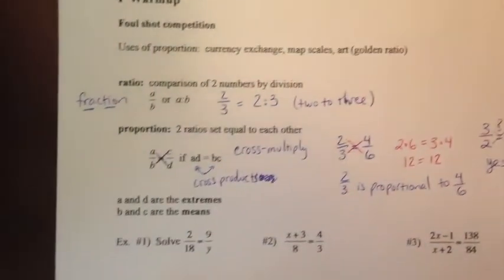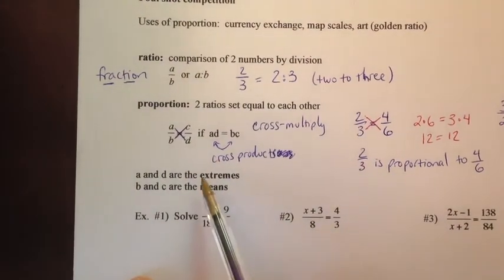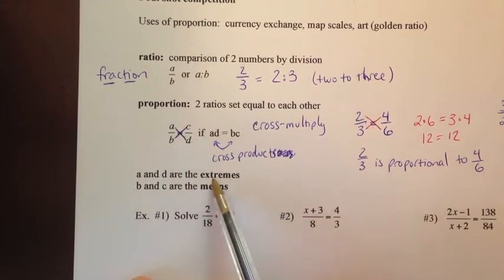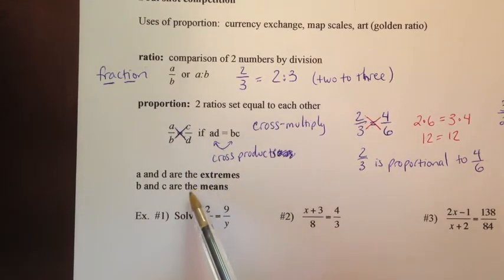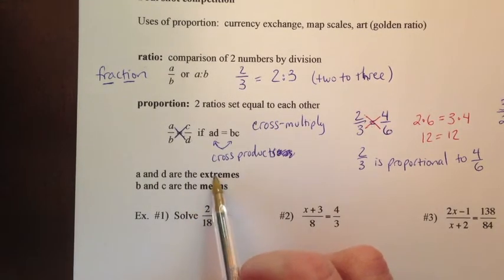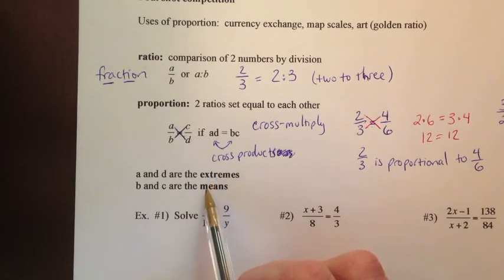Now, there's a little bit more vocabulary here. When you do your cross-multiplying, the A and the D are what we call the extremes. The B and the C are what we call the means. And that's not something that you're going to get asked a whole lot, but that's just something to be aware of.